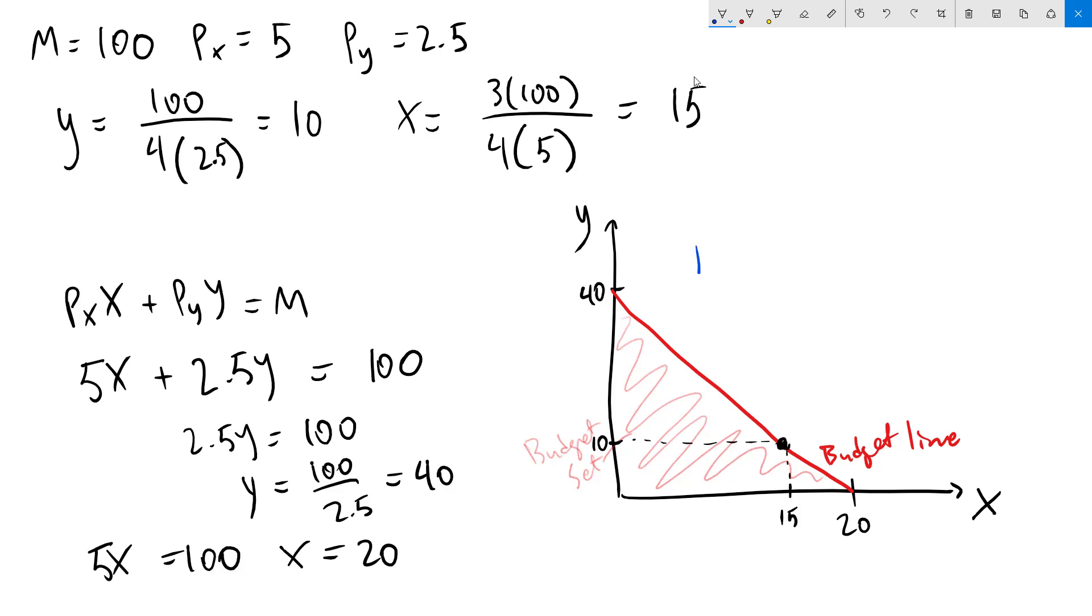We can then sketch an indifference curve. We don't know exactly what it looks like, but it'll be something like this. That will be tangent to the budget line at that point. We also have to make sure that when we draw this, we are following the rules of indifference curves, which means that we can't have one that sort of curls back like this or up like this. They can't look like that.